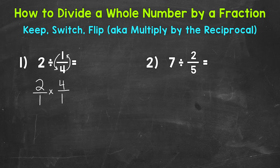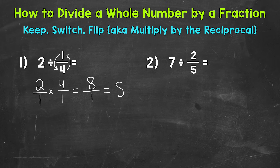Once we get to this point, we have a multiplying fractions problem, so we multiply straight across. Two times four is eight, and one times one is one, giving us eight over one. That's an improper fraction, so we don't want to leave it like that — this simplifies to eight. Our final answer is eight. Two divided by one fourth equals eight.